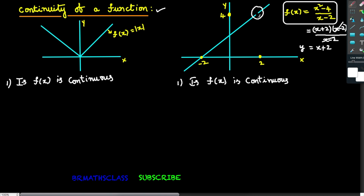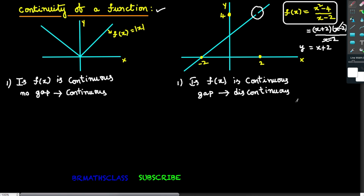The first graph — modulus function — has no gap, so it is continuous. The second function has a gap in its graph, so we say f(x) is discontinuous. Note that this is a general discussion; we are not yet discussing continuity on its domain. That important point will come later.